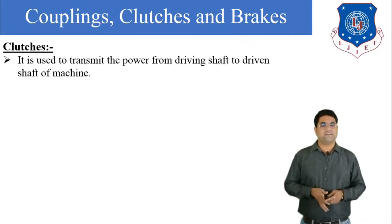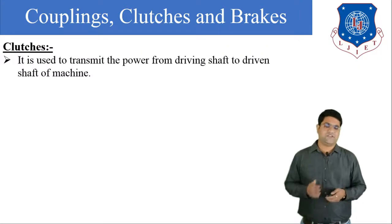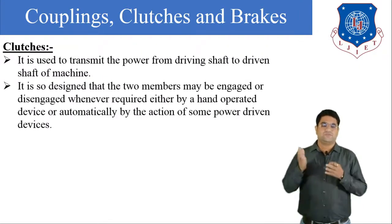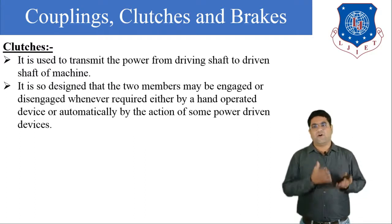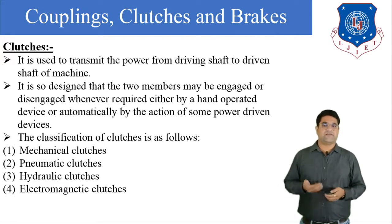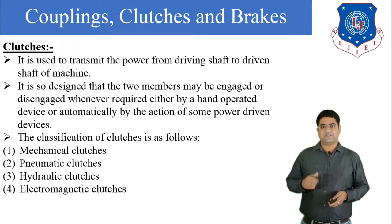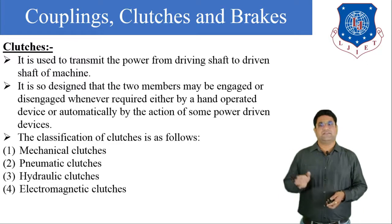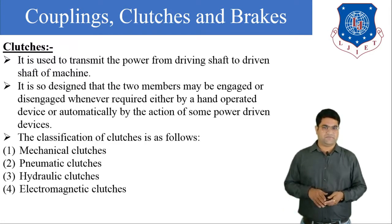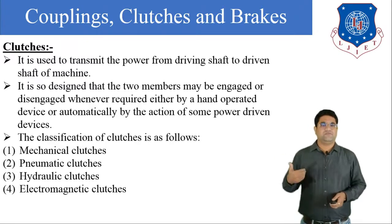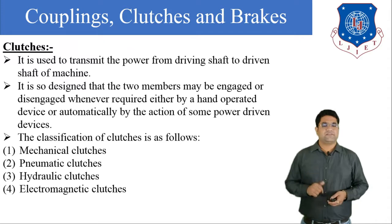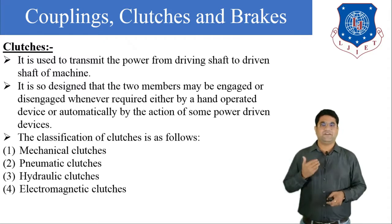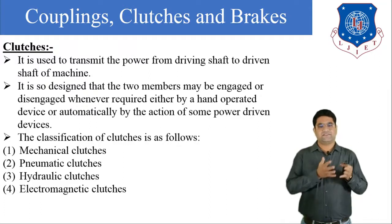Let us define the clutch. A clutch is used to transmit power from the driving shaft to the driven shaft machine. It is used to engage and disengage the driving and driven shaft whenever required. It can be operated manually or automatically. There are various types of clutches available: mechanical clutch, pneumatic clutch, hydraulic clutch, and electromagnetic clutch. In this chapter we are going to discuss three basic clutches — disc clutch, cone clutch, and centrifugal clutch — and we will see their applications.